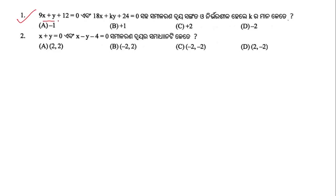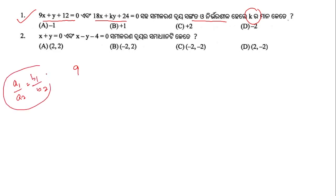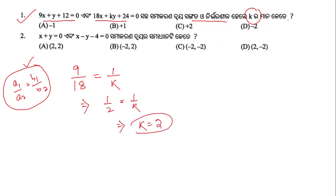Question number 1: 9x + y + 12 = 0 and 18x + ky + 24 = 0. For these two equations to be consistent and dependent, we use the condition a1/a2 = b1/b2 = c1/c2. From the given equations, a1/a2 = b1/b2 gives 9/18 = 1/k, which implies k = 2. So the value of k is 2, and option A is the right answer.